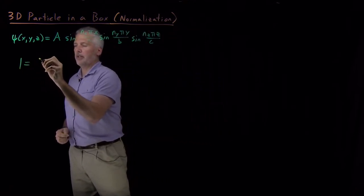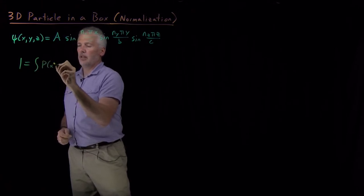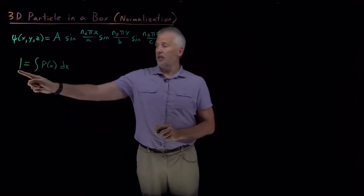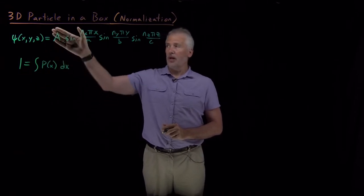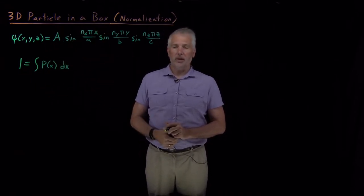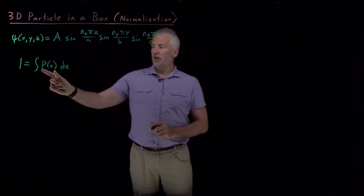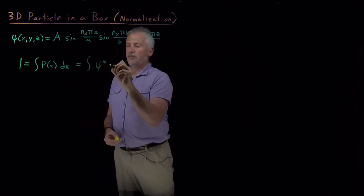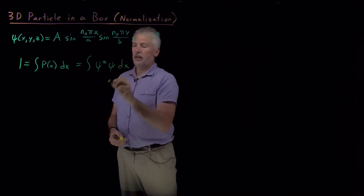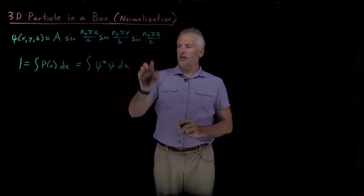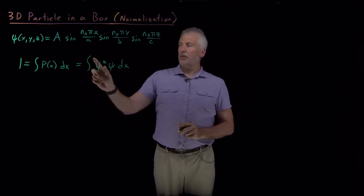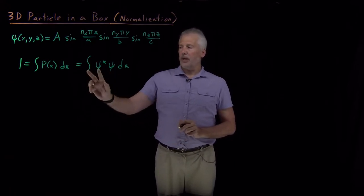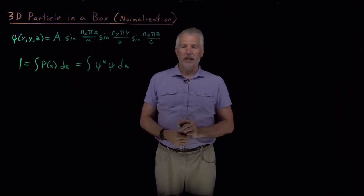Normalization means the particle must exist — it must exist somewhere. It has a 100% chance of being found somewhere in space, or for the particle in a box, a 100% chance of being found somewhere in the box. If I integrate the probability everywhere I have to get 100%, and the probability is the wave function squared. I just need to take this wave function, square it, integrate it, make sure it comes out equal to 1, and figure out the value of A that makes that true.